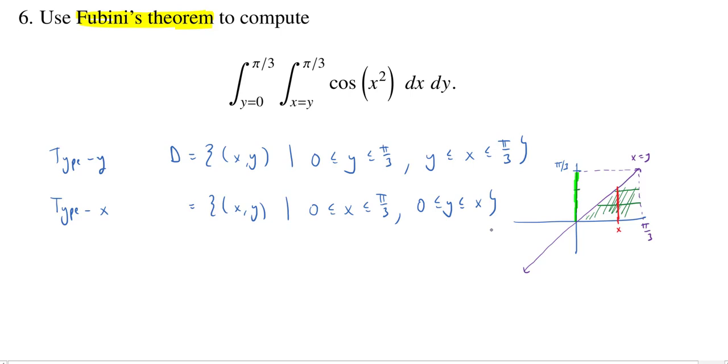So this tells me I can rewrite my integral. We could write this now as the integral over d of cosine of x squared da. So I can rewrite this double integral as the integrated integral, where I start now with x. x will go from 0 to pi over 3, and y will go from 0 to x. I still have cosine of x squared, and then da now will turn into dy dx, because the y here is on the inside.